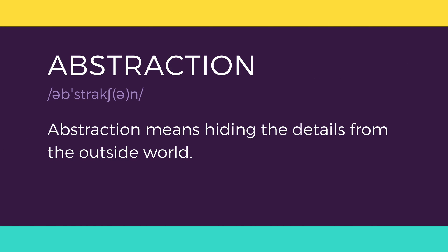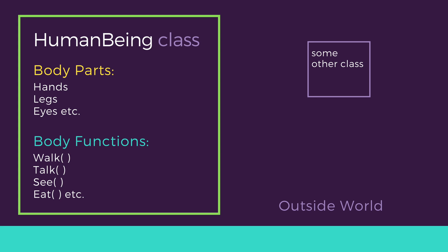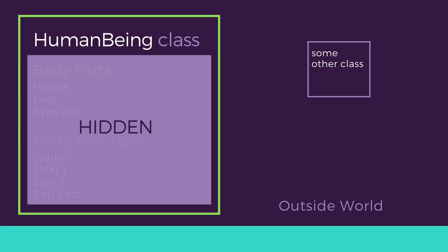Next is the concept of abstraction. Abstraction means showcasing only the required things to the outside world while hiding the details. Continuing our example, human beings can talk, walk, hear, and eat, but the details are hidden from the outside world. We can take our skin as the abstraction factor — hiding the inside mechanism from the outside world.